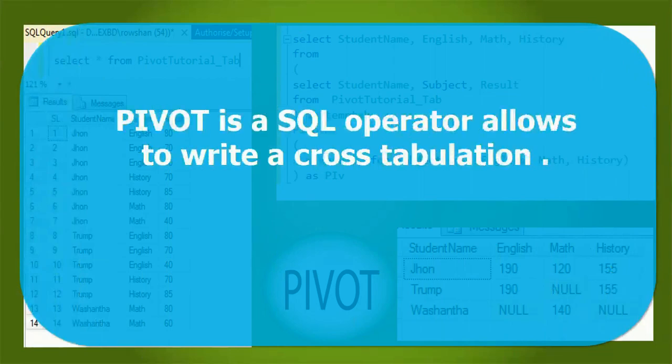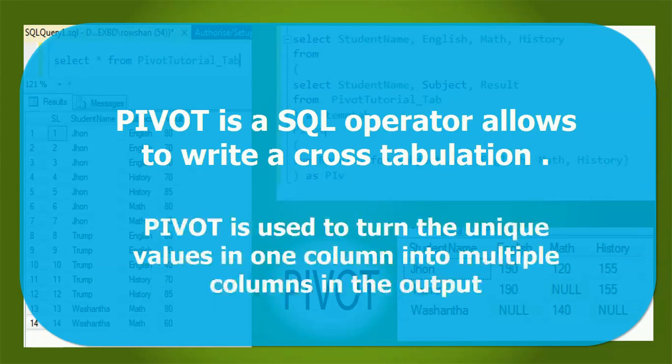PIVOT is a SQL operator that allows you to write a cross-tabulation. PIVOT is used to turn the unique values in one column into multiple columns in the output.